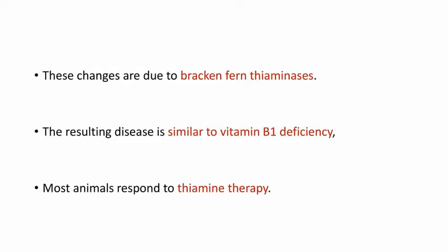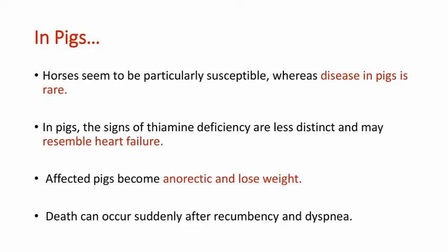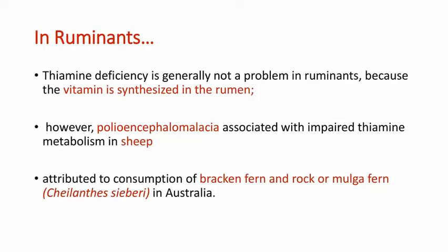In pigs, this disease is rare; horses are mostly susceptible. In pigs, signs of thiamin deficiency are less distinct and may resemble heart failure. Affected pigs become anorectic and lose weight; death can occur suddenly after recumbency and dyspnea. In ruminants, thiamin deficiency is generally not a problem because the vitamin is synthesized in the rumen. However, polioencephalomalacia associated with impaired thiamin metabolism is seen in sheep and is attributed to consumption of Bracken Fern and rock or mulga fern in Australia.